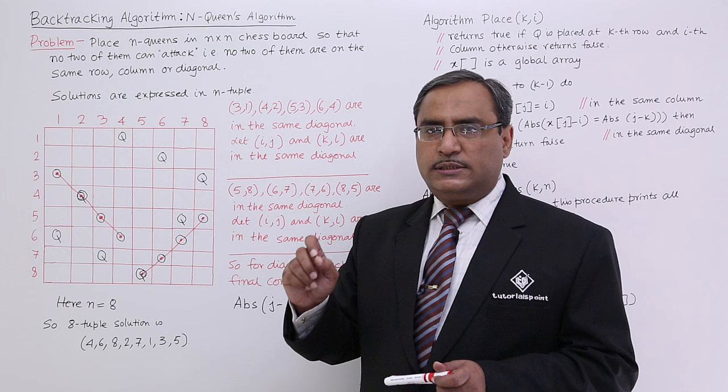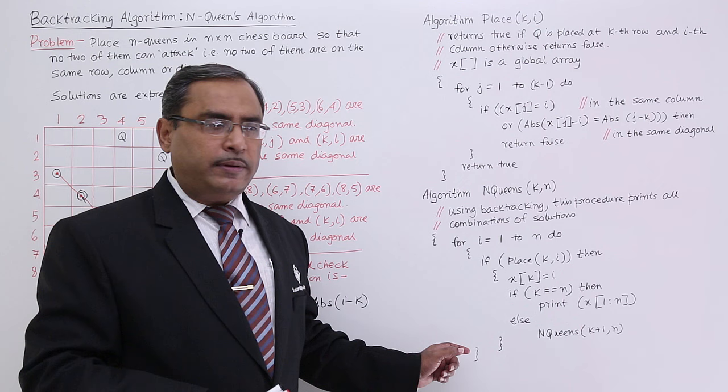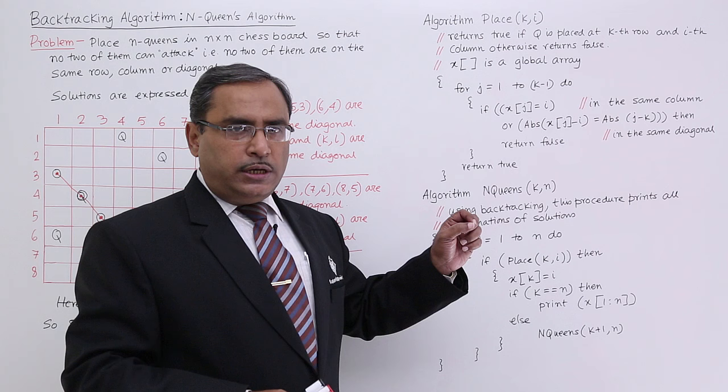Here is the algorithm. It is consisting of two functions: one is the N-Queens function, and another one is the Place function. This particular algorithm will be called from some main function.